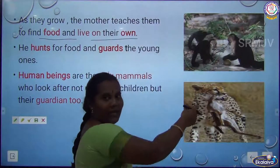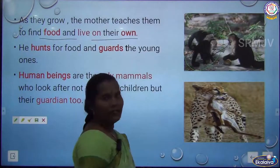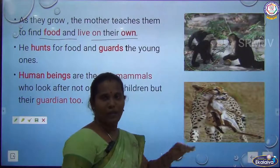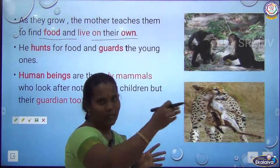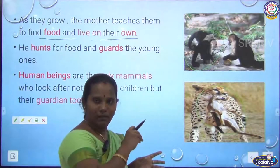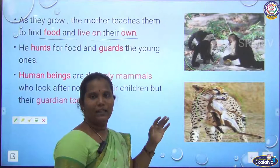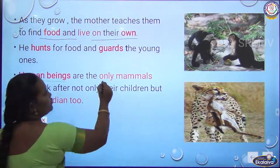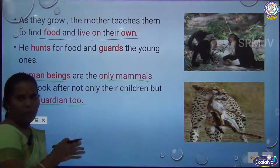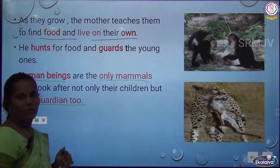Tigers hunt deer and share the food with their babies. Monkeys teach their young to climb trees. Ducks teach their ducklings to swim. Mothers give instructions on how to do their own work and find food. Human beings are the only mammals who look after not just their children but their guardians too — a special characteristic of humans.